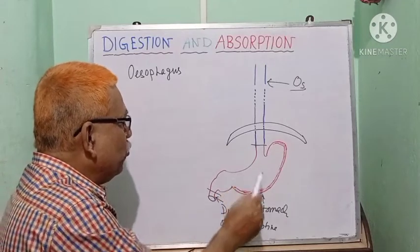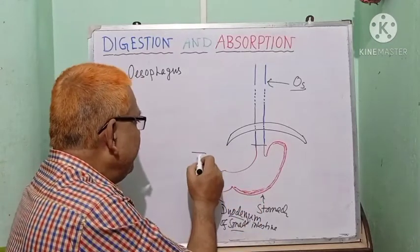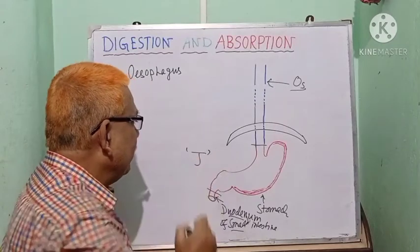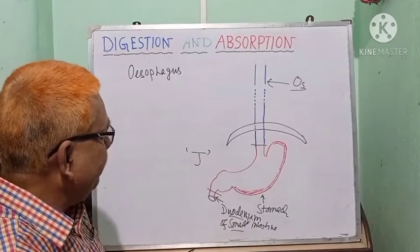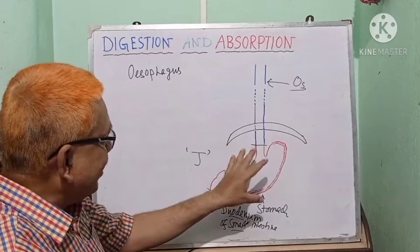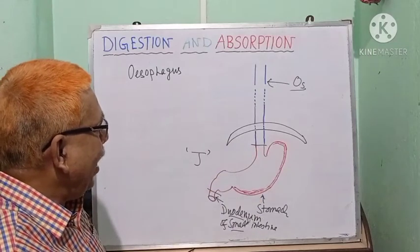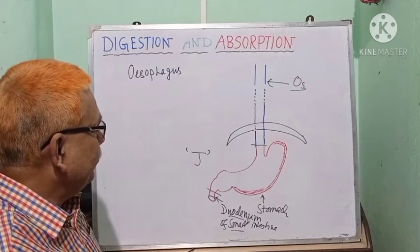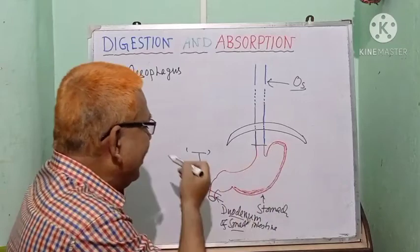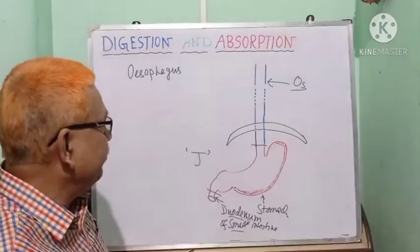It looks like a J-shaped structure. It is a muscular organ, sac-like in structure. And this stomach is divided into various parts.